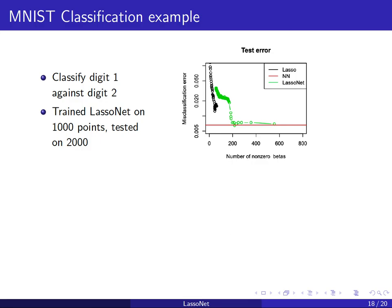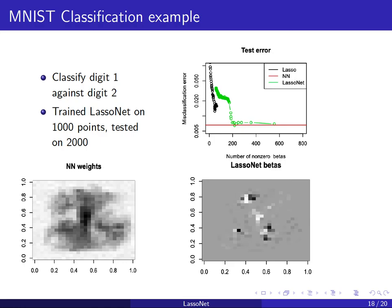If you look at the weights of a standard neural network you get a plot like the one on the left. On the right I'm showing you the support of LassoNet for the best solution, which is around 200 features. It uses much fewer weights. The shape of the pixels shown are basically the pixels that allow you to distinguish the digit one from two.